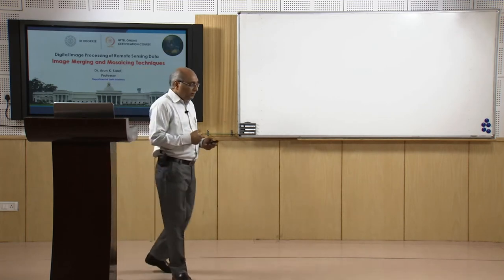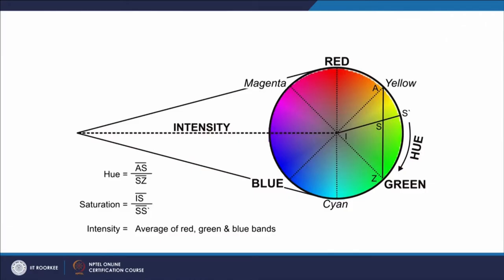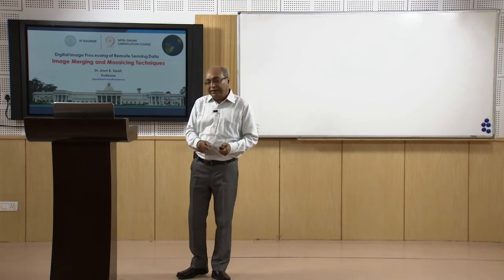To create a new product with higher spatial resolution and spectral characteristics, we can use PAN and LISS-3 data. In order to do this we need to exploit the color cube, which we have already discussed in previous lectures. If you take a cone out of a color cube, the base of the cone has the Newton disc where all colors are represented, with red, green, and blue at the extremes and cyan, magenta, and yellow in between. The axis of this cone represents intensity and the radius represents saturation.